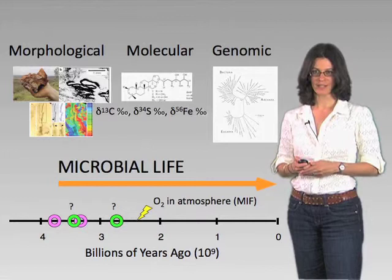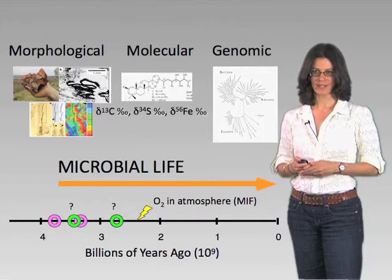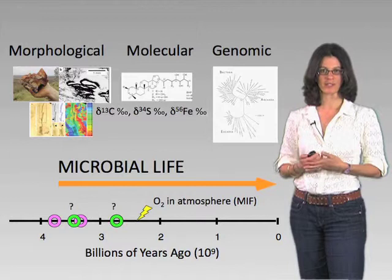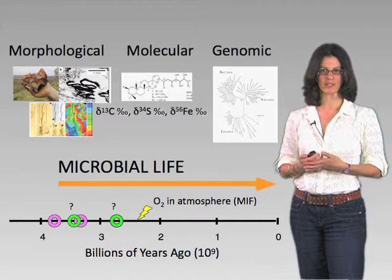That's all I'll say right now on the antiquity of microbial life. Tune in for Lecture 3 in this series, where I'll spend more time talking about how we use a particular compound found in lipids of modern cells as a potential indicator for oxygenic photosynthesis, and whether or not this is a valid thing to do.